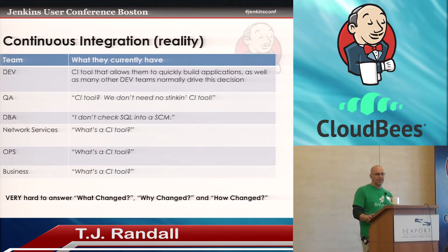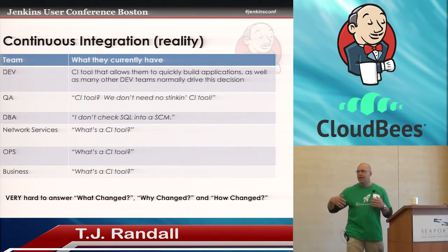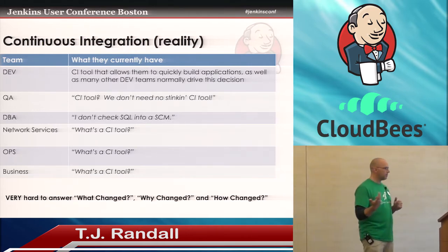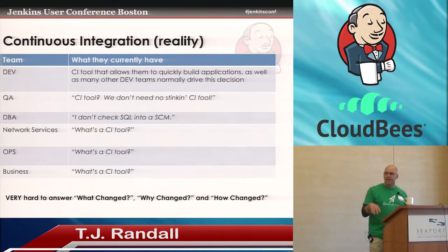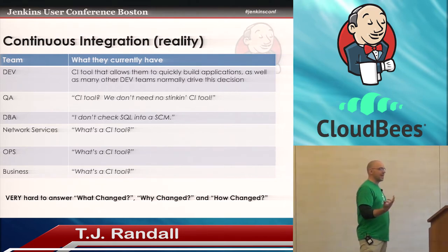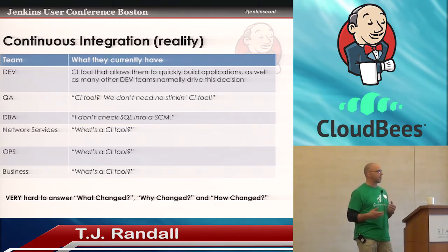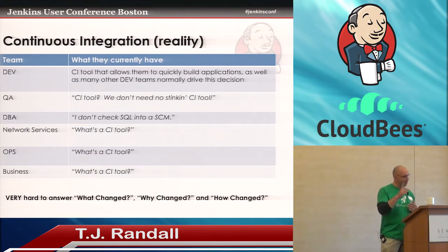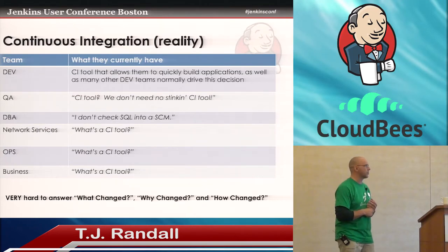First, continuous integration. What's the reality? You talk to a dev team and they're super happy—they've got a tool that allows them to build applications, do all their testing and code coverage. But the QA team might say, we don't need a CI tool, just give us the application you built. And these other consumers—the DBAs—that's a hard conversation in some organizations. Why are you guys not automating your part of the application? For a lot of companies, this tends to be a very distinct silo. The DBA says, we don't need to check our SQL, it's not code. And the rest of the consumers in production don't even know what a CI tool is.